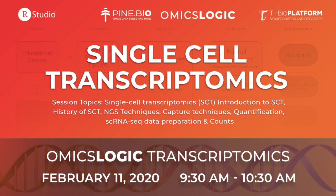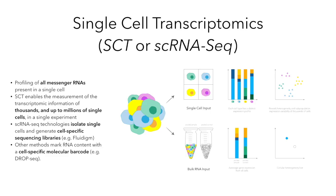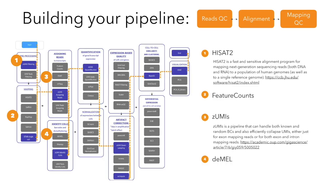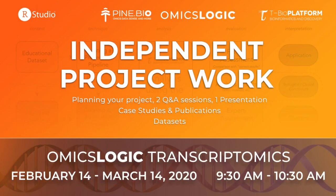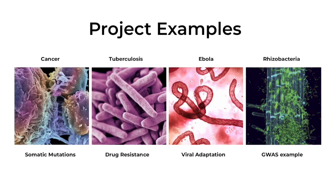Finally, we will conclude the program speaking about single-cell transcriptomics. Single-cell transcriptomics helps identify all messenger RNAs present in a single cell. Unlike bulk RNA-seq profiling, where sequencing libraries are generated from thousands of cells, scRNA-seq technologies isolate single cells and generate cell-specific sequencing libraries. Each participant will have an opportunity to study these techniques in the context of a project, with a number of examples to pick from, ranging from biomedical to agro-biological studies.